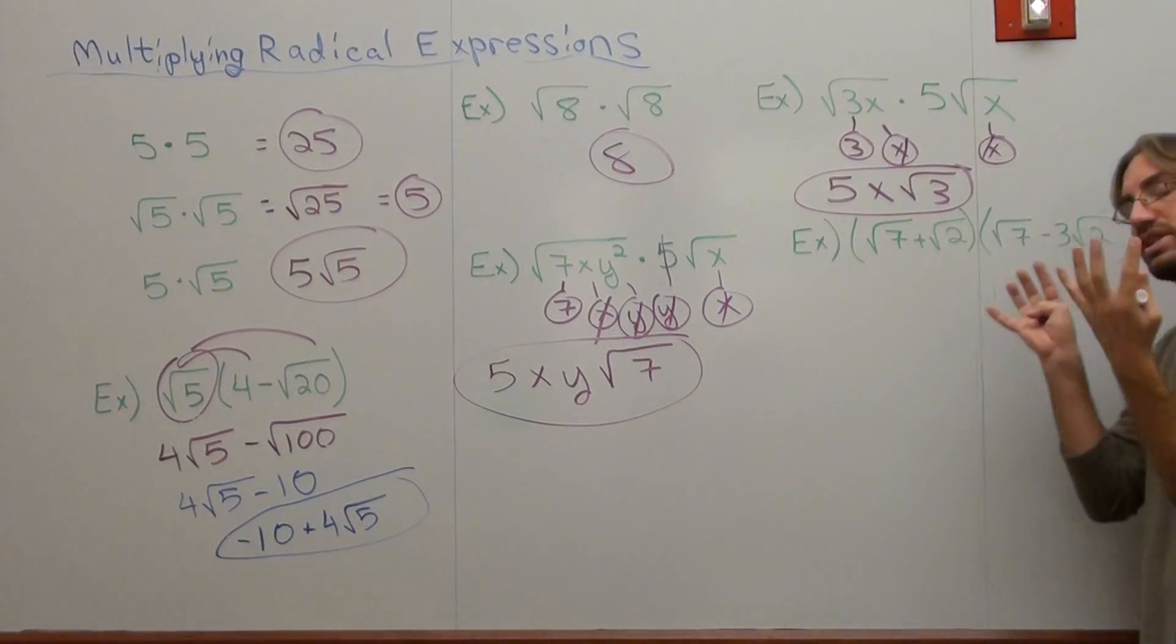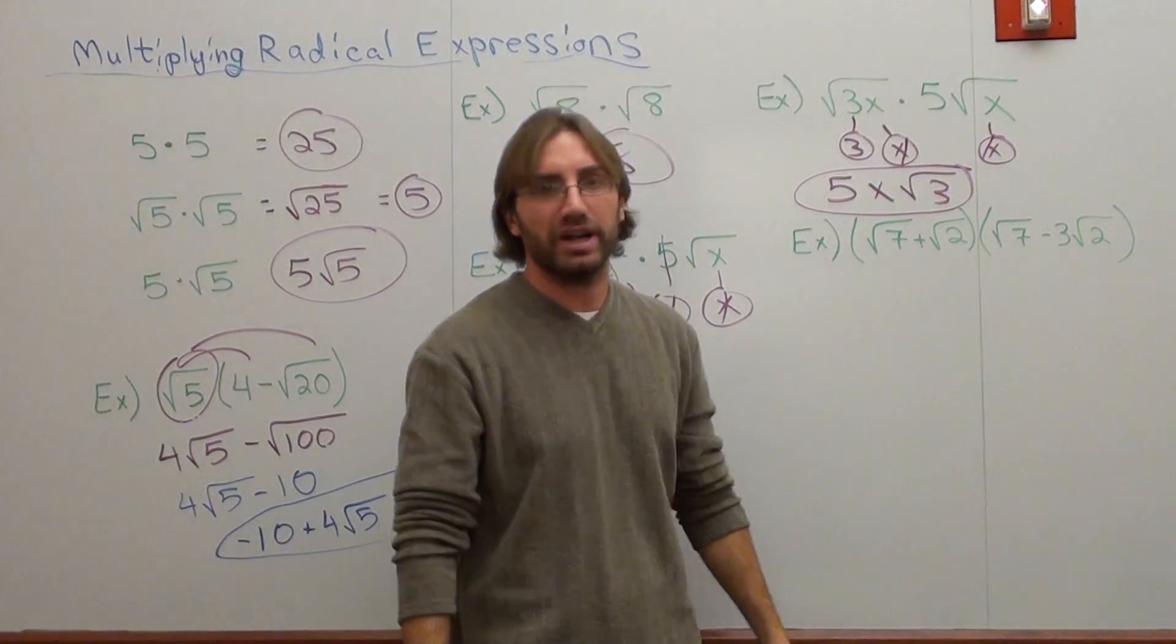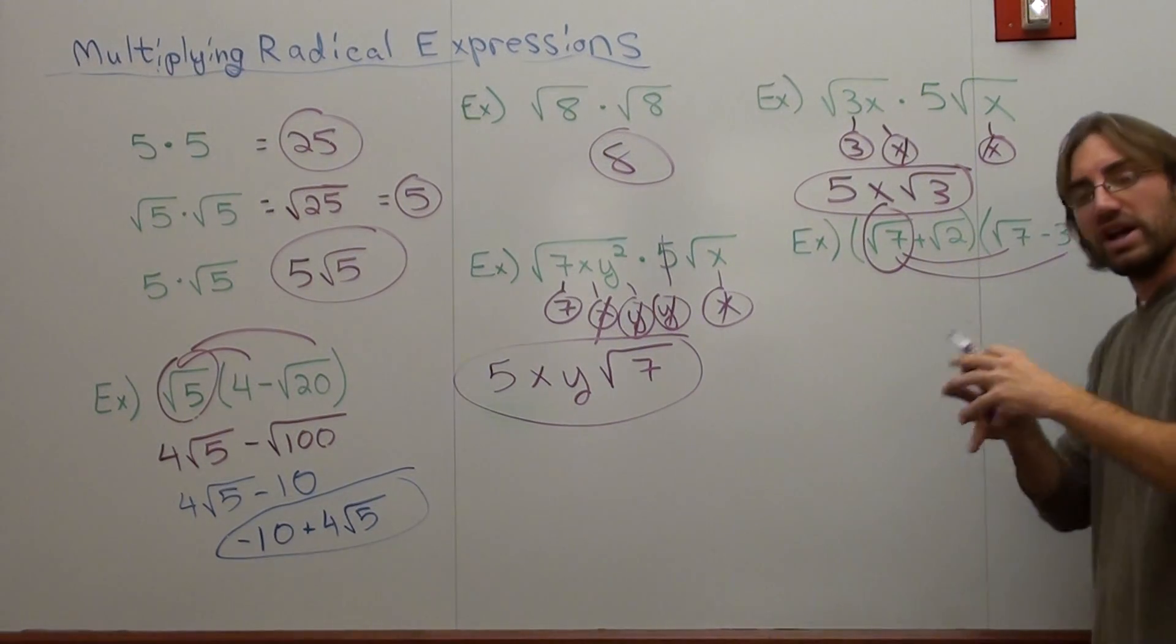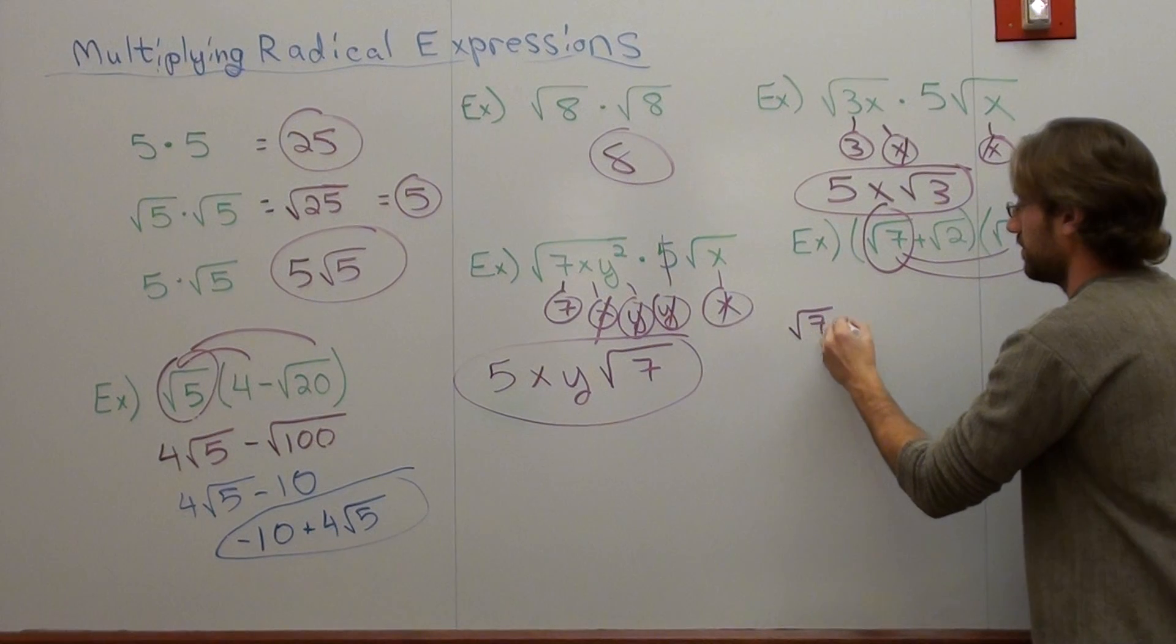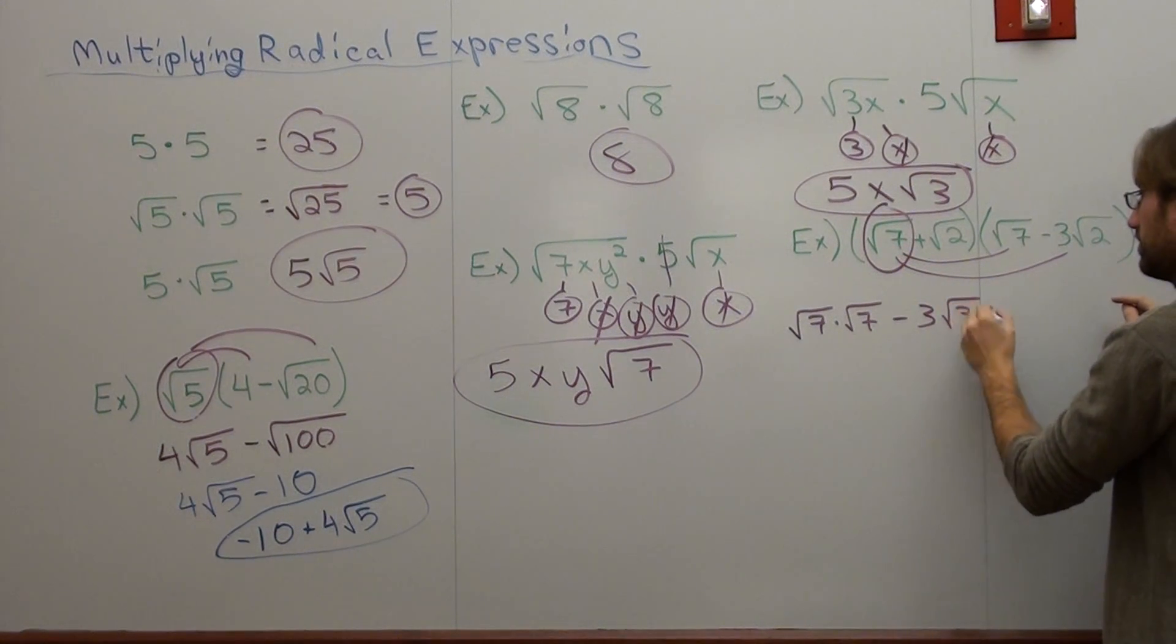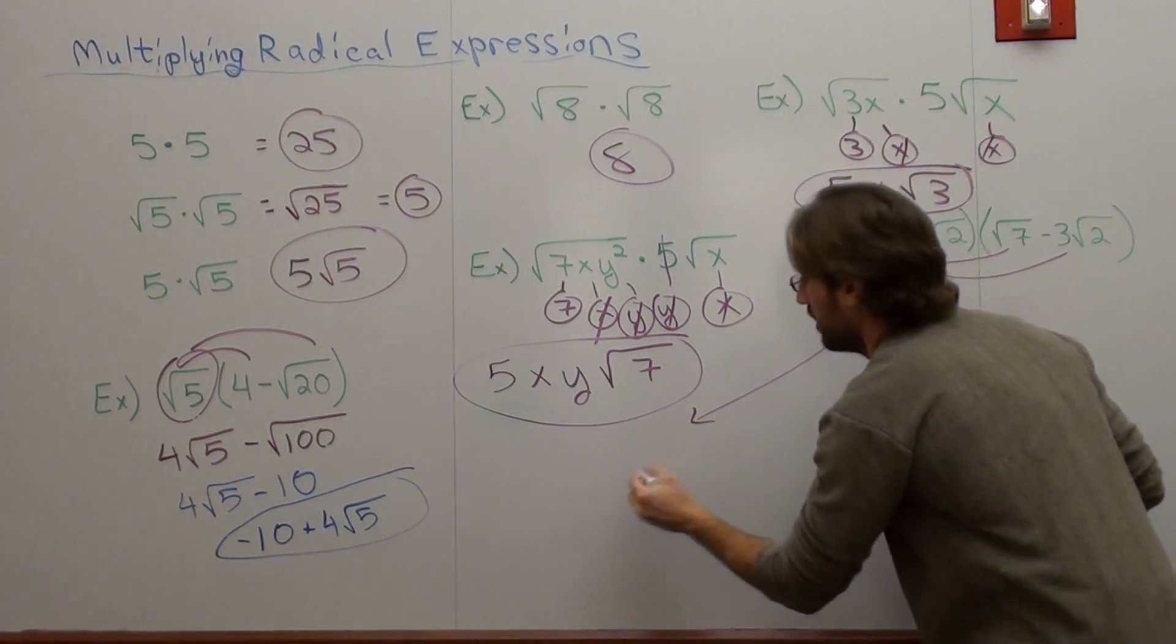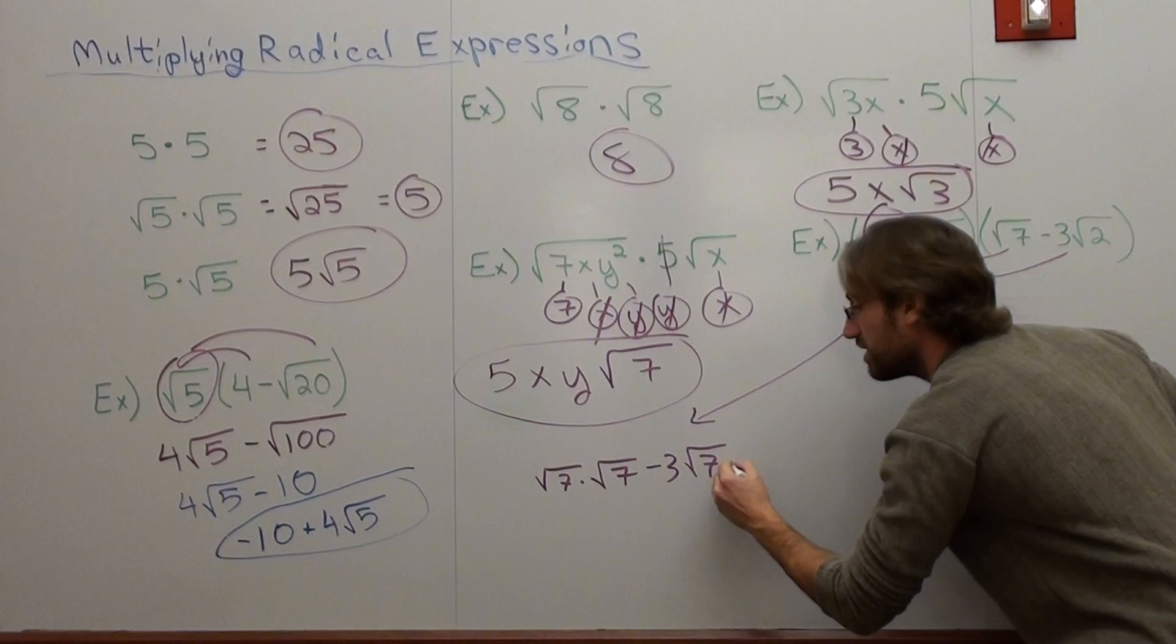This one: Quantity square root 7 plus square root 2 times the quantity square root 7 subtract 3 square root 2. Let's try it out. We are going to distribute, double distribute, or FOIL, depending on what you want to call it. We're going to distribute the square root 7 times square root 7, square root 7 times negative square root 2. I'm going to write it out the long way. Some of you might see it much faster, but I just want to write it out so you can see it.